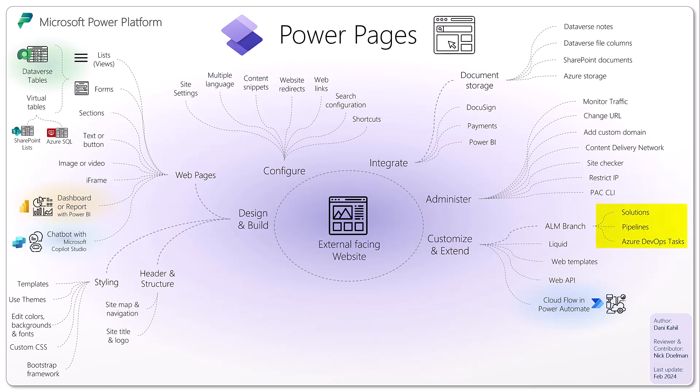You can add Power Pages websites to solutions, and once part of a solution you can set up pipelines to move your entire website from dev to UAT or production — using Dataverse pipelines or Azure DevOps pipelines, depending on your preference.